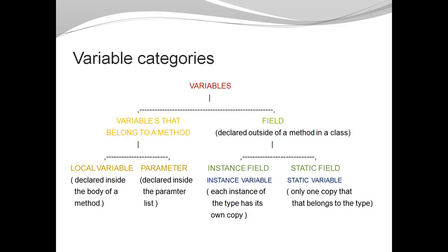Here you can see the different types of variables that we have in Java. Some variables belong to a specific method. Those are the local variables and the parameters. Local variables are declared inside the body of a method. Parameters are declared in the parameter list.